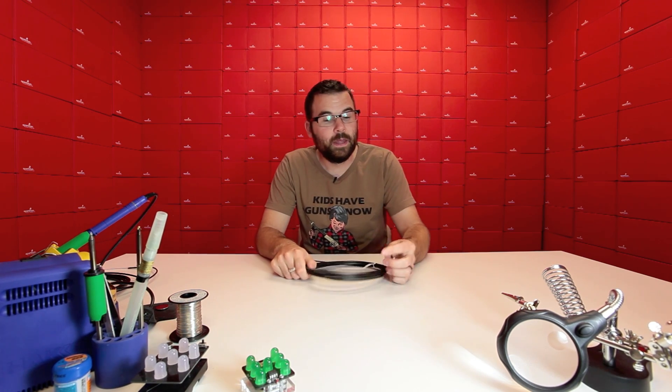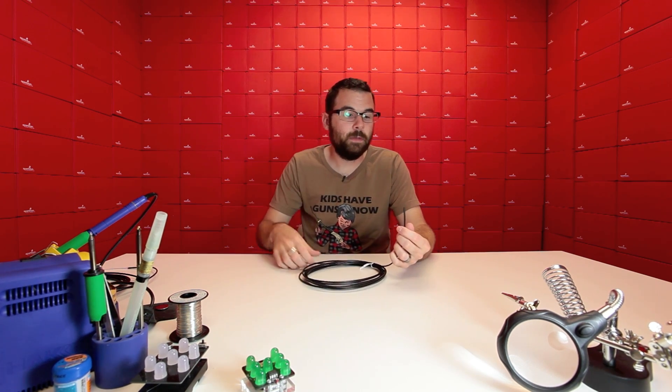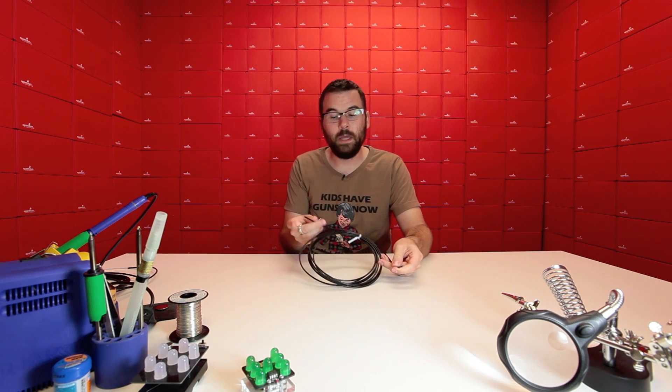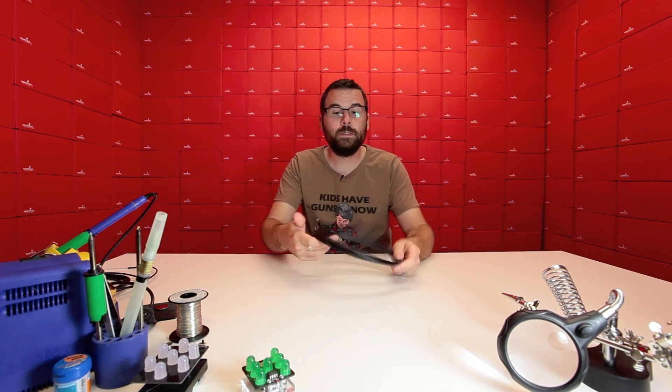Here we've got a 5 meter length of fiber optic cable. Fiber optic cable is really interesting because you pass light into it and you get the light out on the other end. This particular cable is about three and a quarter millimeters in diameter and has 64 fibers inside of it.